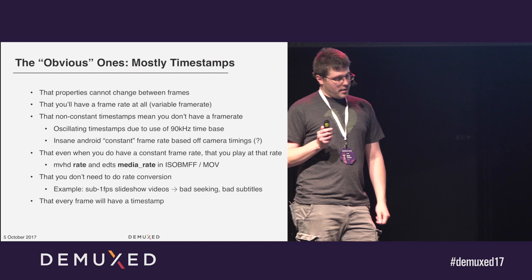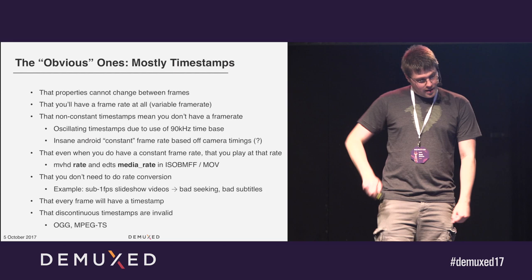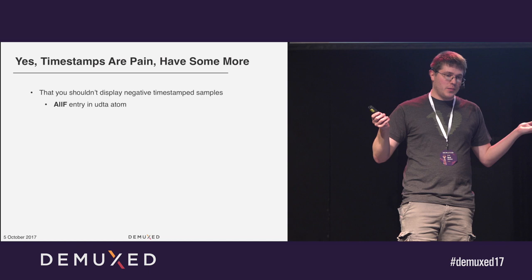Sometimes you just don't have timestamps and you have to interpolate them — MPEG-TS. Frames are not necessarily even in order. AUG, everyone's favorite format, and again MPEG-TS — timestamps are assigned, don't let anyone tell you different. And what do you do with negative timestamp ones? You might think you'll just drop them, except when you don't — again, an Apple invention.